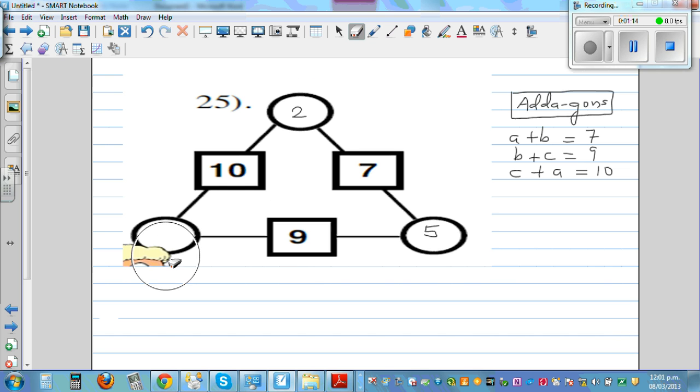Let me swap the numbers around. What if I write 2 and 5 like this? 2 plus 5 is 7, 2 plus 7 is 9, but this is not right. So this is also not working.